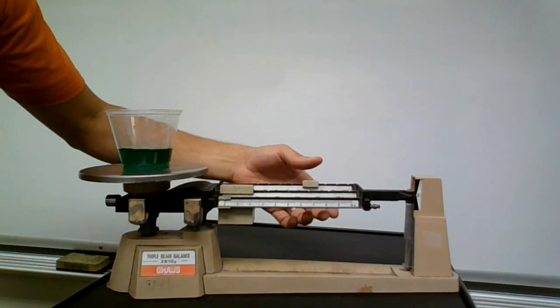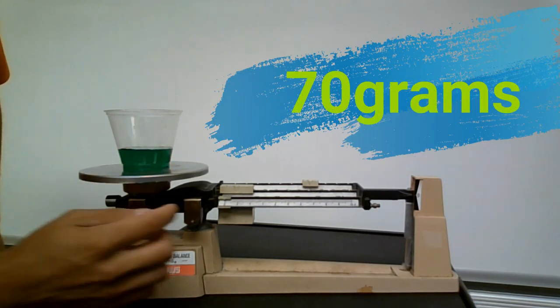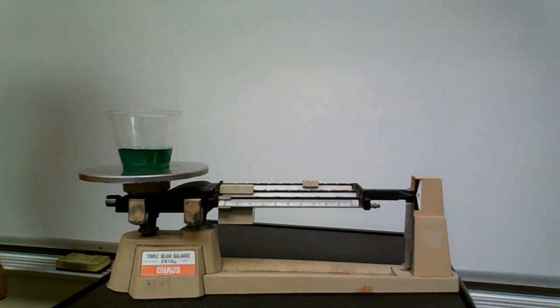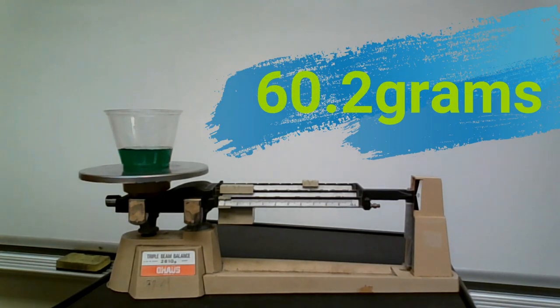Now if we look closely, the mass is 70 grams. Now 70 grams minus our container weight, 70 minus 9.8, we get our answer of 60.2 grams.